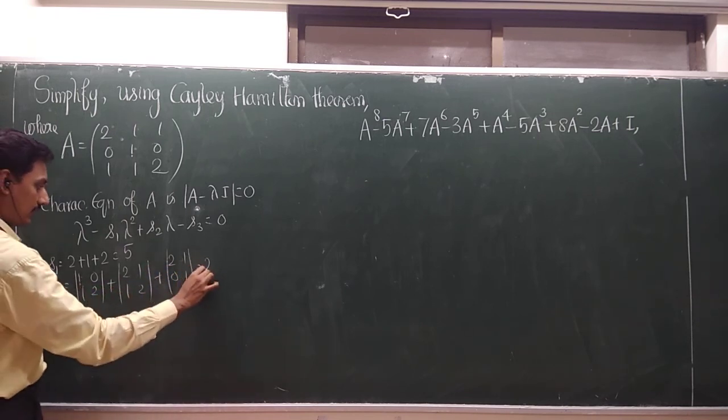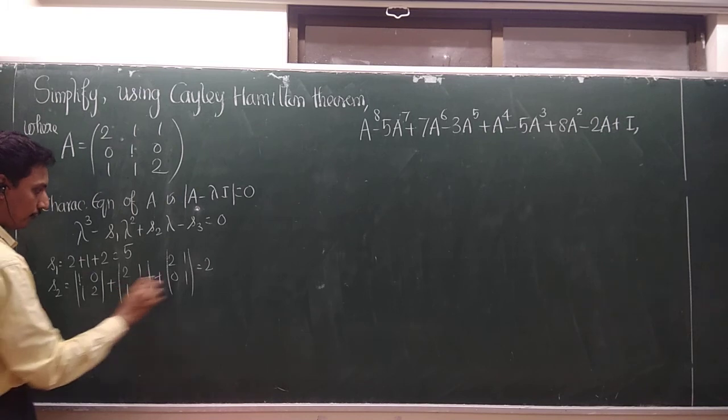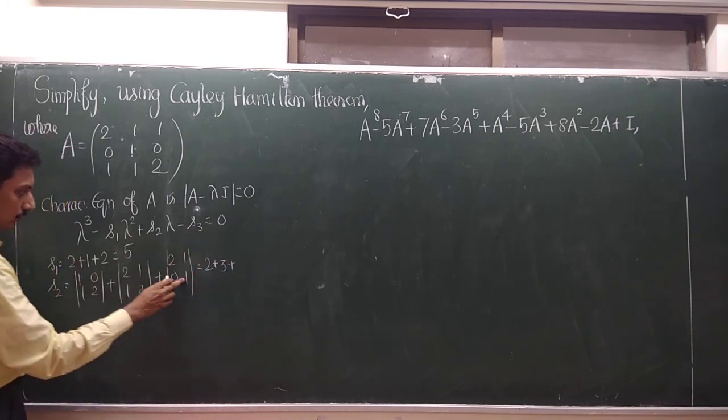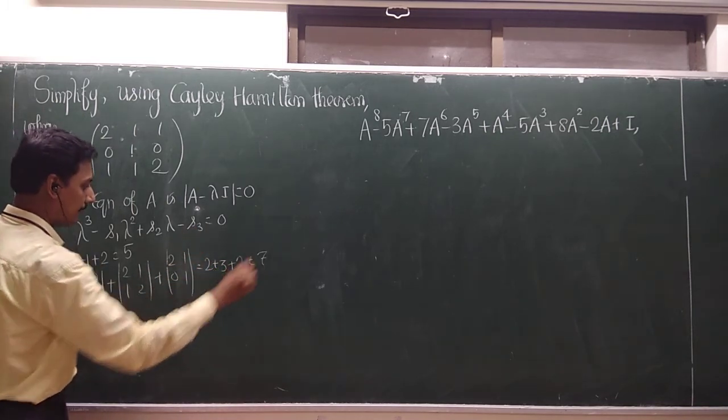What is that? 2, yes, correct? 2 into 2 is 4, 4 minus 1, 3 plus 2. So the answer is 7.